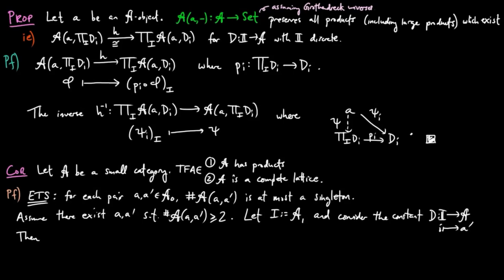Then by the previous result, we have that the cardinality on the set of morphisms from A to the product is equal to the cardinality of the product of the morphisms from A to A prime,